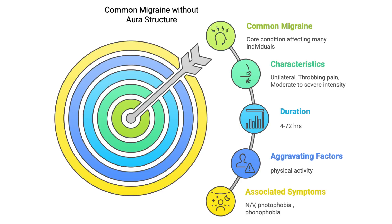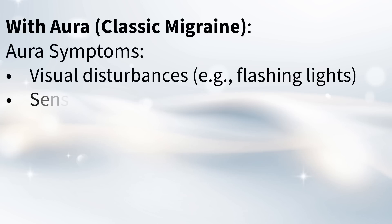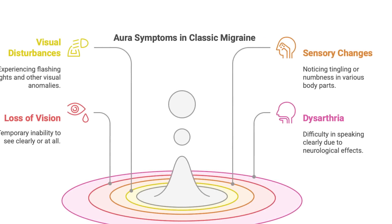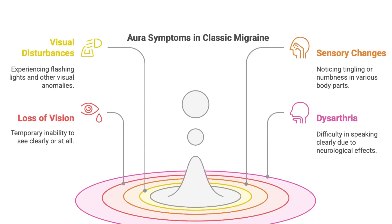With a classic migraine, the aura is like a warning sign that the headache's coming. The guide calls these visual and sensory symptoms before pain. You might see flashing lights, zigzag lines, or even a temporary blind spot in your vision. You might also have tingling, pins and needles — what they call paresthesia — maybe even temporarily lose some vision, or have trouble speaking, which is called dysarthria. It's like your nervous system is doing all these funky things before the actual headache starts.